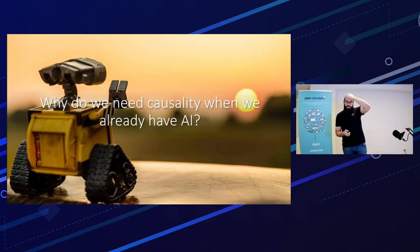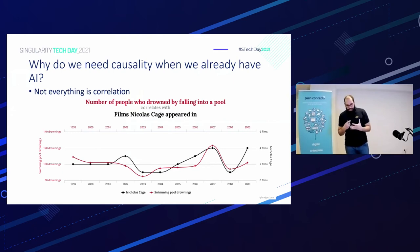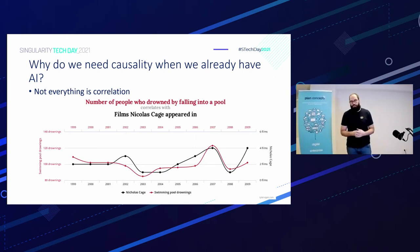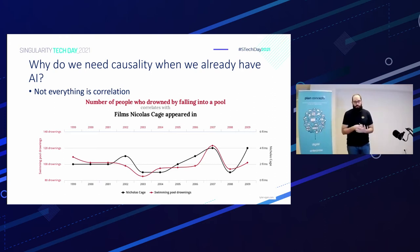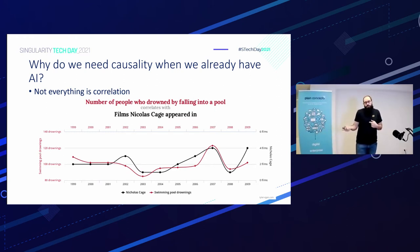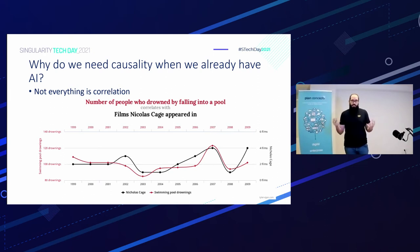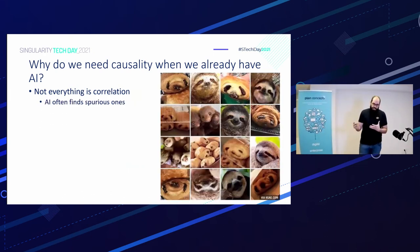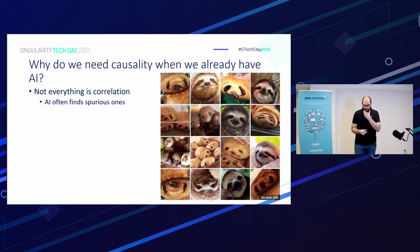Why do we need causality if we already have AI? One of the problems with AI is that it only extracts correlations and tries to extract trends from data — it doesn't have real deep knowledge. As you can see in this picture, how correlated is the number of Nicolas Cage films and the number of people who drowned in pools? A machine learning model can learn this correlation and treat the data the same way, but they are very different contexts.